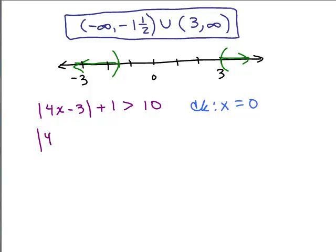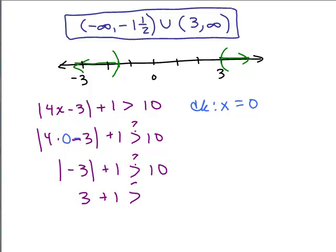So this better come out false. We have 4 times 0 minus 3 plus 1. Is that going to be greater than 10? So what is this? 4 times 0 is 0 and 0 minus 3 is negative 3. So I've got absolute value of negative 3 plus 1. Is that going to be bigger than 10? Absolute value of negative 3 is 3. Is 3 plus 1 bigger than 10? And I think right here you could say no.